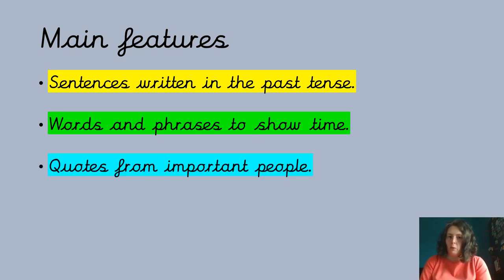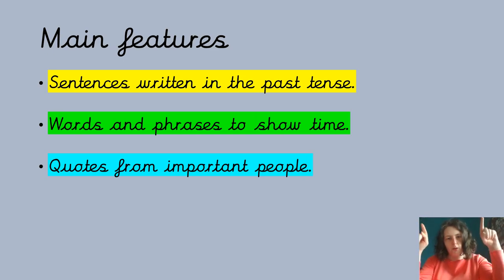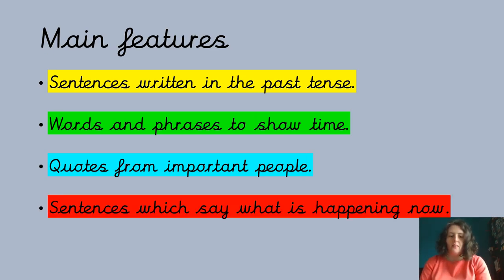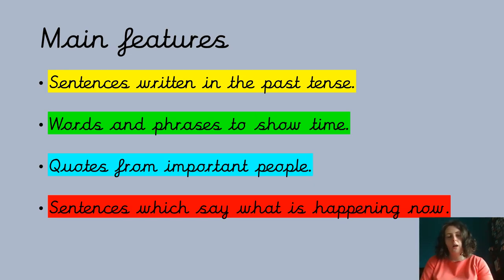The third feature is quotes from important people. We all know what a quote is because we did this last week — that's just what people say about events. Sometimes they're in speech marks, which are two punctuation marks floating in the air, showing a quote from someone about this story or event. The last feature is sentences which say what's happening now. For example, in the Great Fire of London, we might talk about everything that's burned down and what's going to happen next — London will need to be rebuilt, London will be cleaned up and start to be rebuilt.